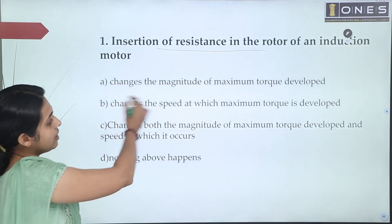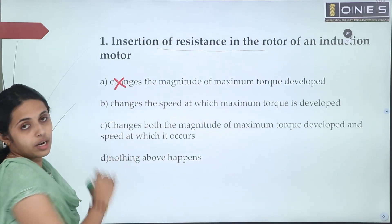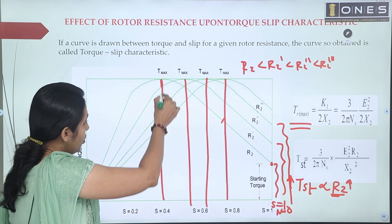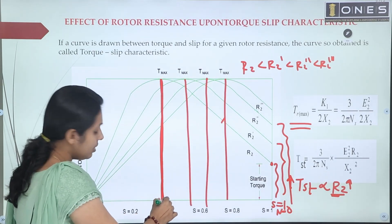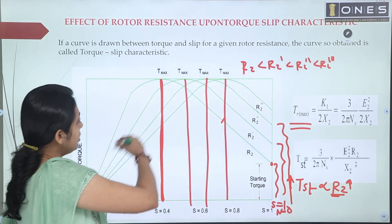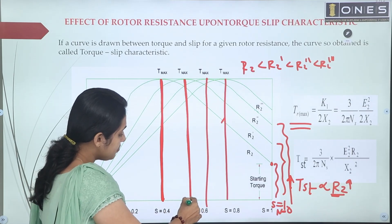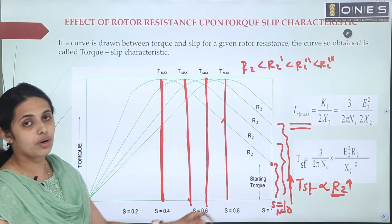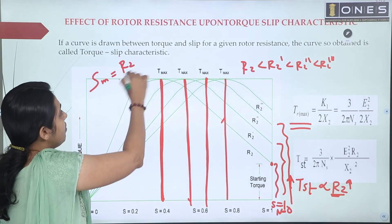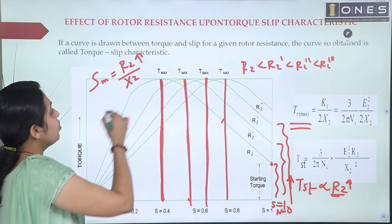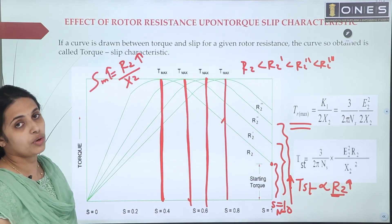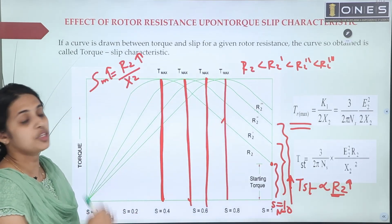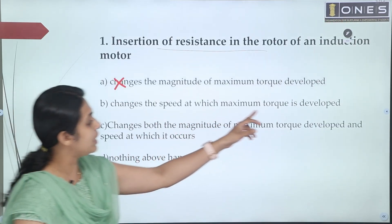Looking at the options: Option A says it changes the magnitude of maximum torque developed — but maximum torque is constant regardless of rotor resistance. Option B says it changes the speed at which maximum torque is developed. The slip at which maximum torque occurs is equal to R2 divided by X2. When rotor resistance increases, this slip increases, meaning the speed at which maximum torque occurs changes.